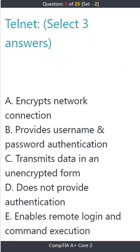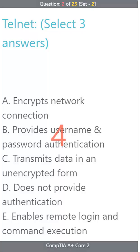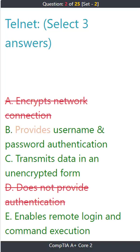Question 2. Telnet — select 3 answers. A) encrypts network connection, B) provides username and password authentication, C) transmits data in an unencrypted form, D) does not provide authentication, E) enables remote login and command execution. The correct answers are B) provides username and password authentication, C) transmits data in an unencrypted form, E) enables remote login and command execution.